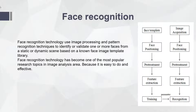The second part is face recognition. Face recognition technology uses image processing and pattern recognition techniques to identify or validate one or more faces from a static or dynamic scene based on a face image template library. It has become one of the most popular research topics in the image analysis area because it is easy to implement and very effective. The process of template-based face recognition involves positioning, preprocessing, feature extraction, and then using a trained template to recognize the image.